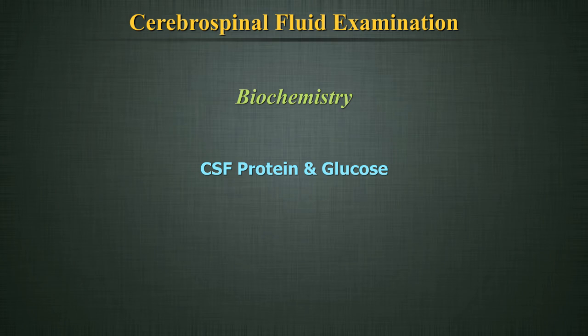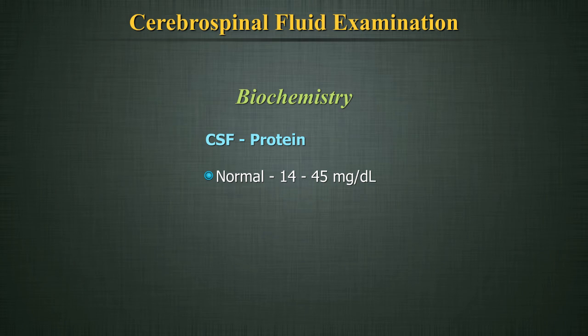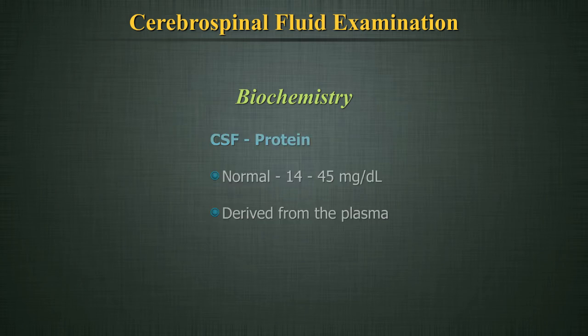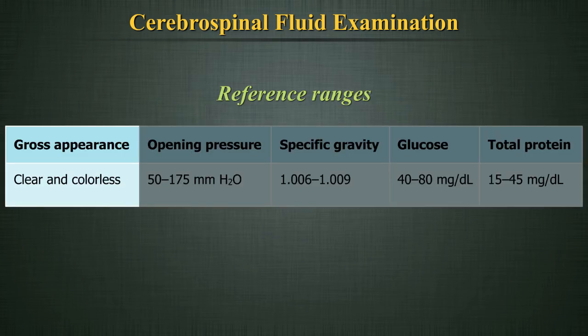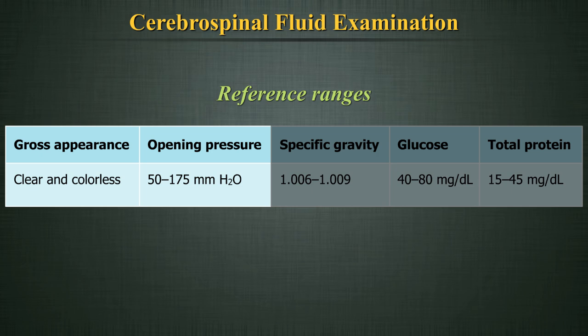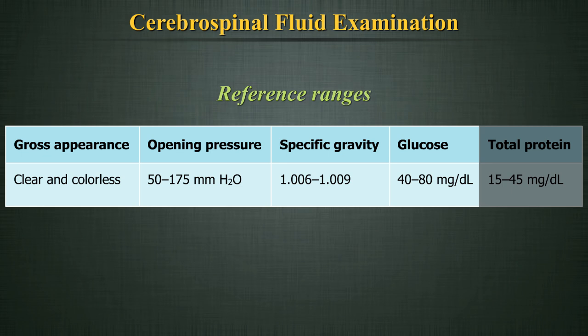Biochemistry: CSF glucose and protein are measured in the same way as serum samples. Look for special instructions from the manufacturer regarding programming or calibrators. Normal CSF protein concentration is 14-45 mg/dL, derived from plasma — note this is in mg/dL rather than g/dL as in serum protein determination. Normal CSF glucose is 40-80 mg/dL.